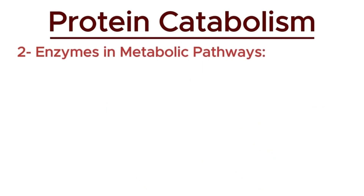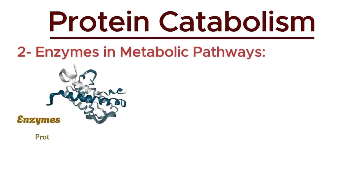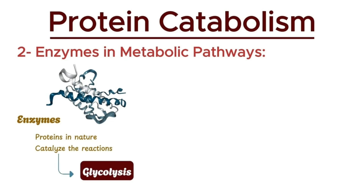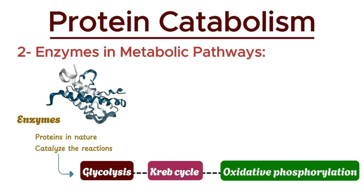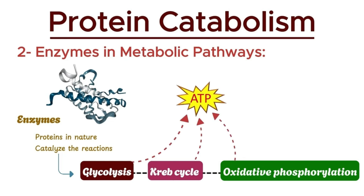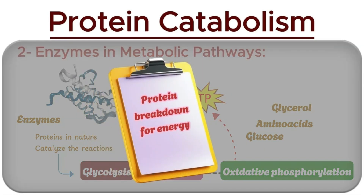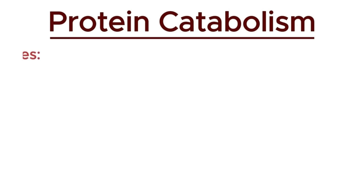Moreover, many enzymes, which are proteins, catalyze the chemical reactions involved in metabolic pathways like glycolysis, the Krebs cycle, and oxidative phosphorylation. These pathways generate ATP from glucose and other nutrients. In this video, I'll explain the entire process in detail, including where these processes occur. So let's get into it.